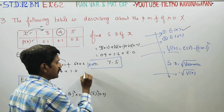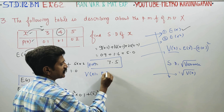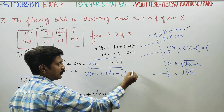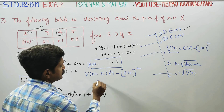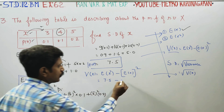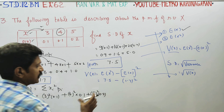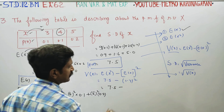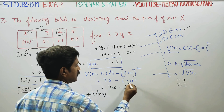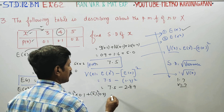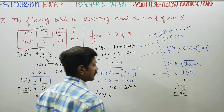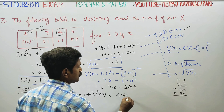Variance of X equals expectation of X squared minus expectation of X whole square — that is the formula. So: 7.5 minus (1.7) squared. 1.7 into 1.7 equals 2.89. So variance equals 7.5 minus 2.89.